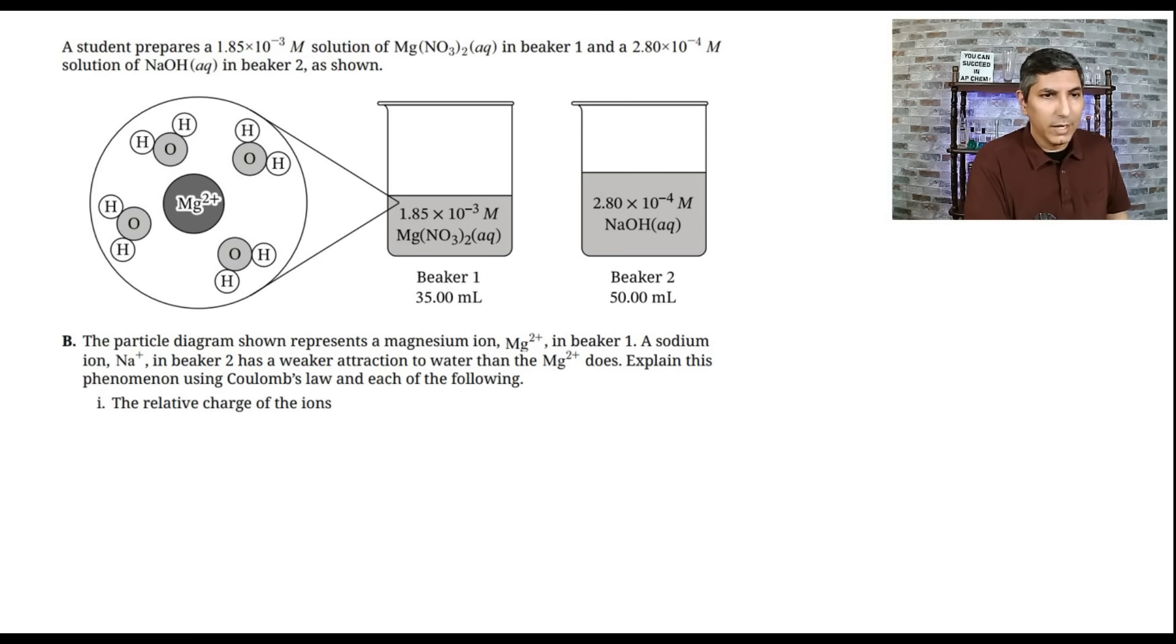Let's move on to part B. It says a student prepares a 1.85 times 10 to the negative third molar solution of magnesium nitrate in beaker one, which is the first one here, and a 2.80 times 10 to the negative fourth molar solution of sodium hydroxide solution in beaker two, as we see here on the right. And we have a particle diagram that's shown here represents a magnesium ion, Mg2+, in beaker one.